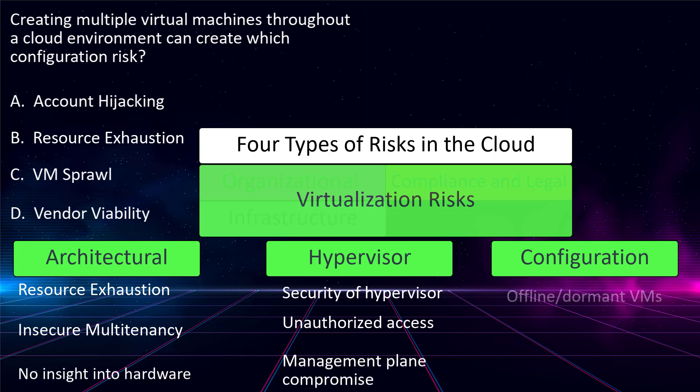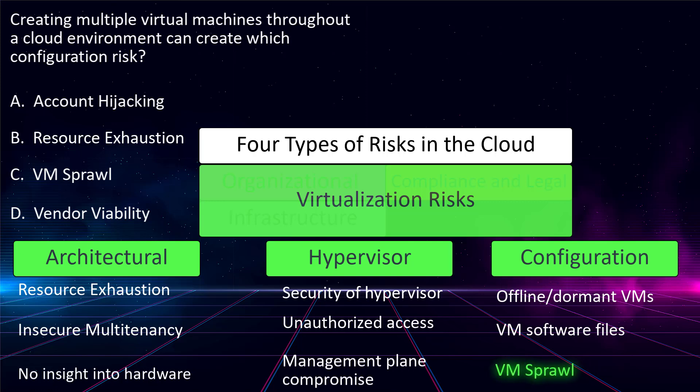Configuration risks include things like the security of offline VMs that were once used but not anymore — turned off or lying dormant in some section of your cloud network that everyone forgot about. Another configuration risk is the virtual machine itself, which is really just a lot of different file types put together — one big software package. And of course, VM sprawl is another configuration risk and the correct answer to this CCSP practice question.